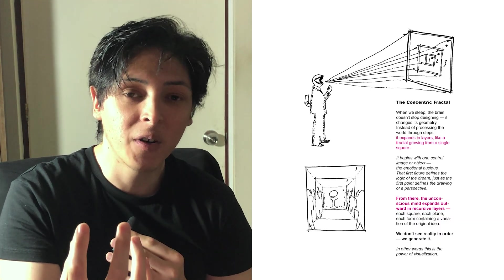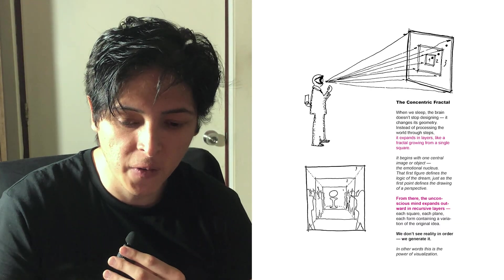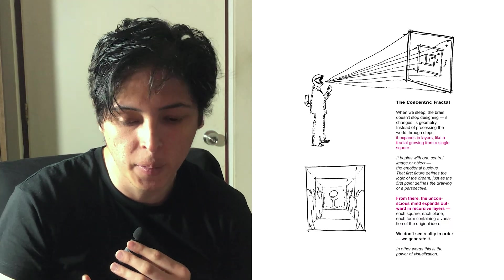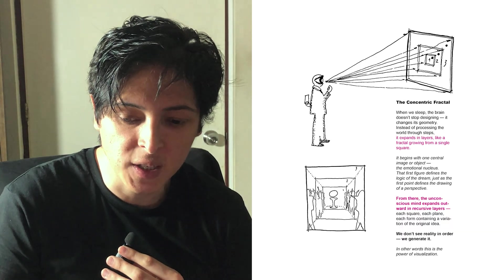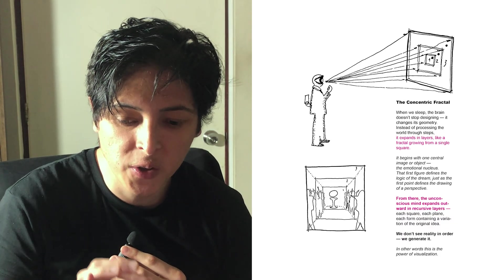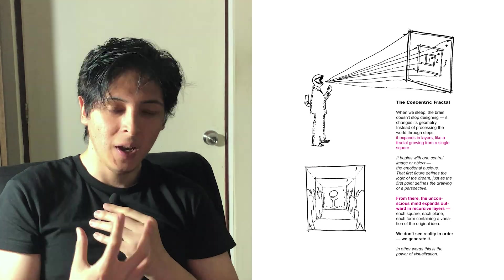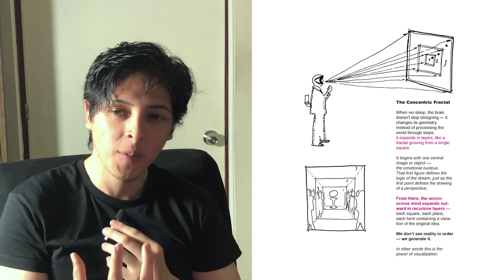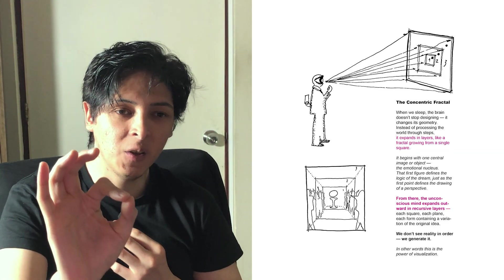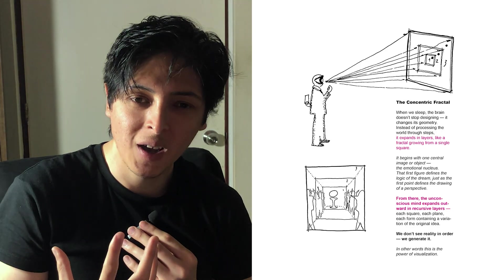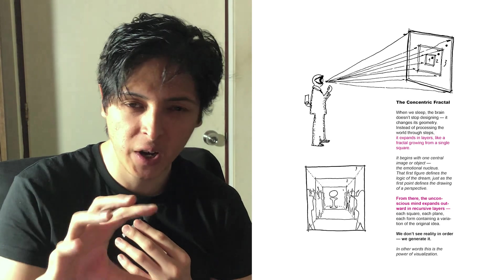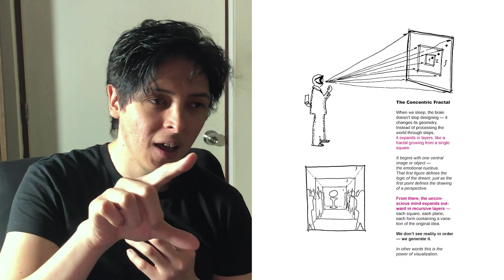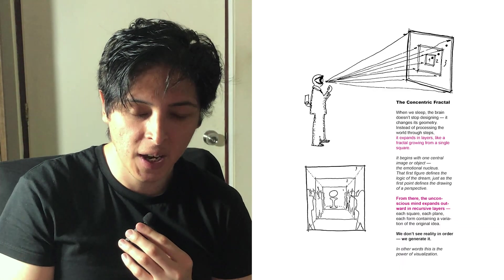That first object is the first context of your mind when you are dreaming. The first figure defines the logic of the dream, just as the first point defines the drawing of a perspective. From there, the unconscious mind expands outward in recursive layers. This is the first frame to understand visualization — because visualization is a kind of geometry focused on one point, and from that point you can expand. The first frame is the most important part of the power of visualization, and then you can create all the context around it.